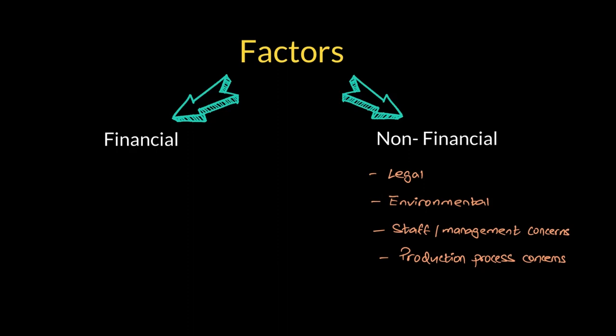Staff management concerns are another non-financial factor. Staff can feel threatened by the introduction of new machines or technology, because as capital intensity increases, labor starts to feel that machines may replace manual work. Staff may also be concerned about whether the business has sufficient liquidity to pay bonuses, which can lead to a decline in morale. We also need to consider production process concerns — for example, will production be halted while a machine is being replaced, causing lost sales? Can the process continue without the machine? Are cheaper alternatives available?